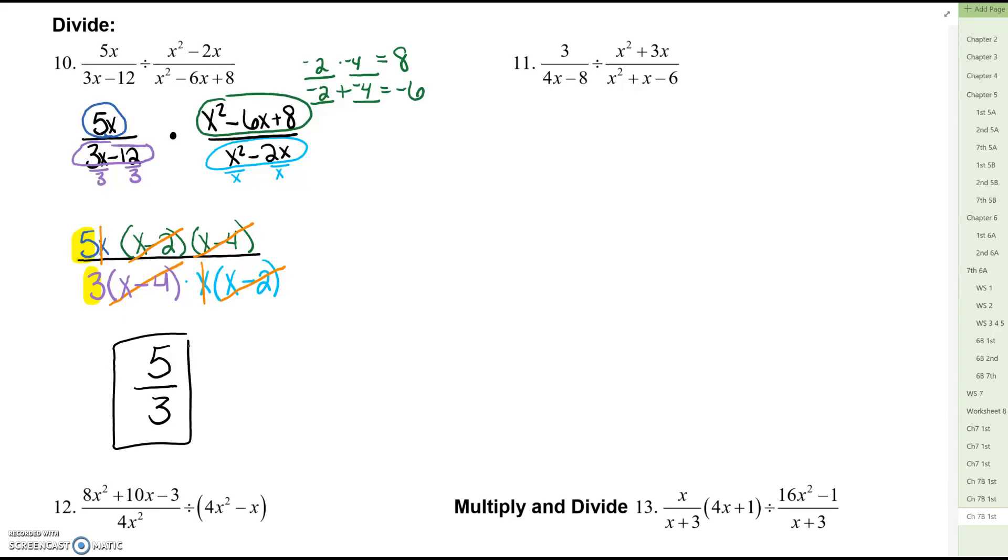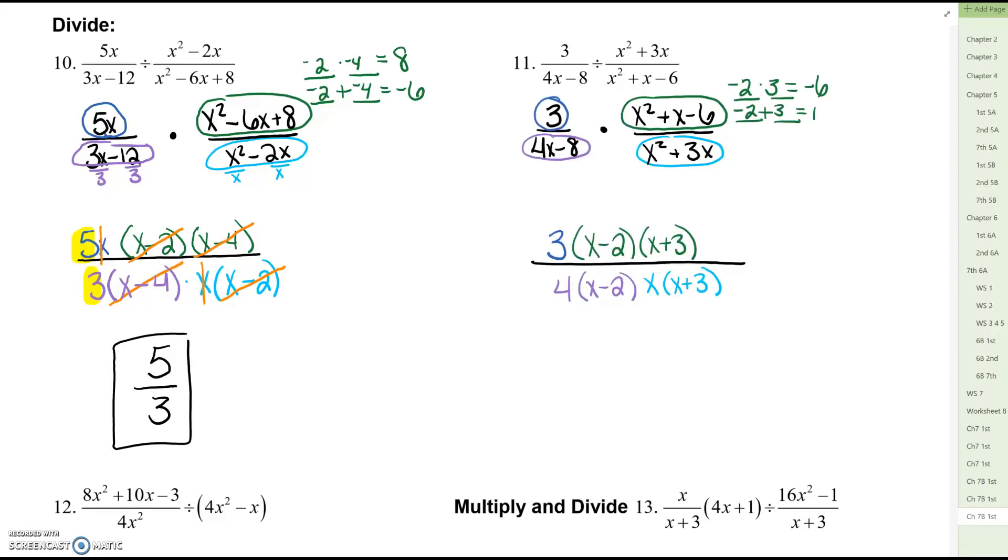I would like you to try number 11 on your own. Keep the first fraction the same, flip the second fraction, change the sign to multiply. If you're watching the video pause the video. Try this problem and then play after you're done. Pause it. So keep the first fraction the same. Change the sign to multiply. Flip the second fraction.